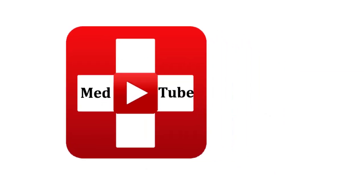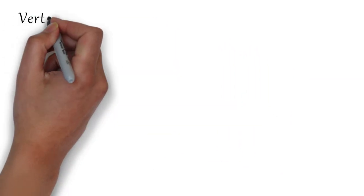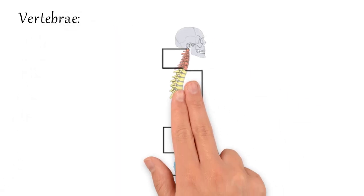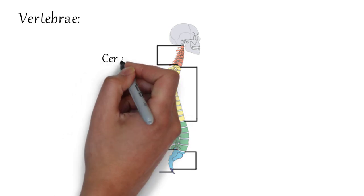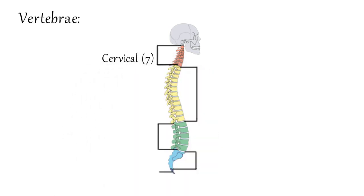Hi, hello, welcome to Med Tube. Today we are going to discuss the skeletal structure of vertebrae. There are 33 vertebrae which are subdivided into 5 groups based on morphology and location.